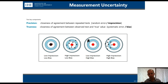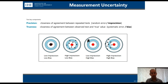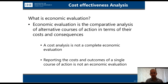This precision-and-trueness framework is a really important input to value assessment. But getting low imprecision and low bias is not the end of the story to establish value. We want that as an input to the process of establishing value, and health economics is really all about value.